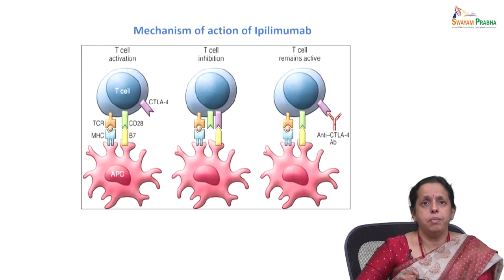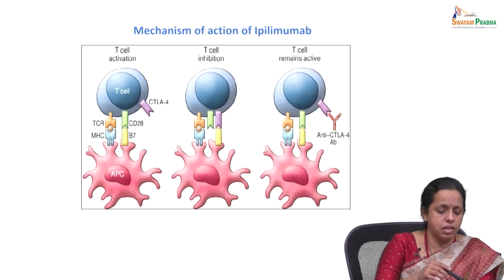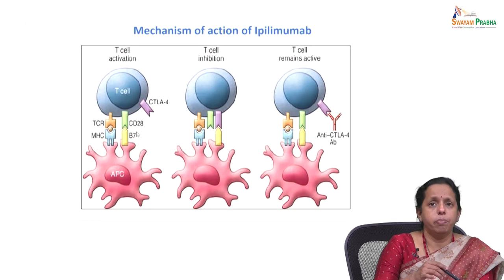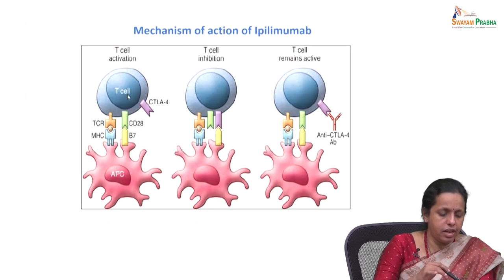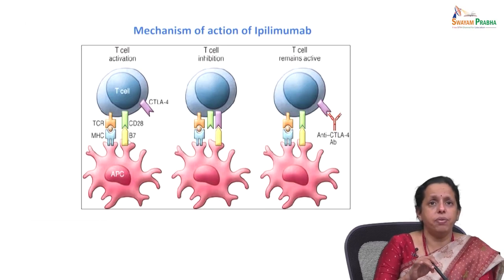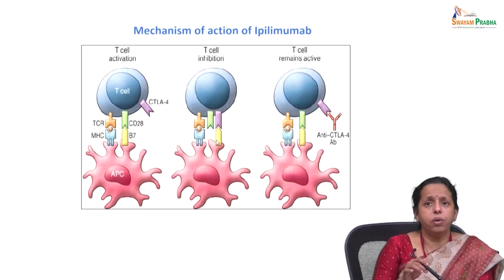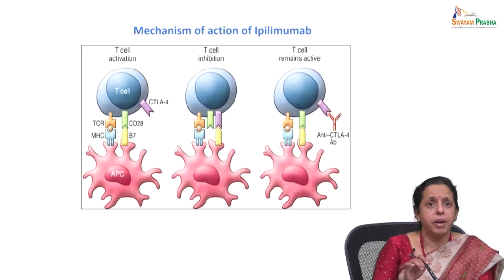Blocking the CTLA-4/B7 interaction favors CD-28/B7 interactions. As a result, there is increased T cell production, increased T cell survival, leading to activation of T effector cells and increased diversity of T cell response on tumors. This is ipilimumab — its mechanism of action: T cell activation requires stimulation through both the T cell receptor and CD-28. Binding of B7 family proteins to CTLA-4 inhibits T cell function, while CTLA-4 expression increases in parallel with T cell receptor stimulation, serving as a brake on T cell response.